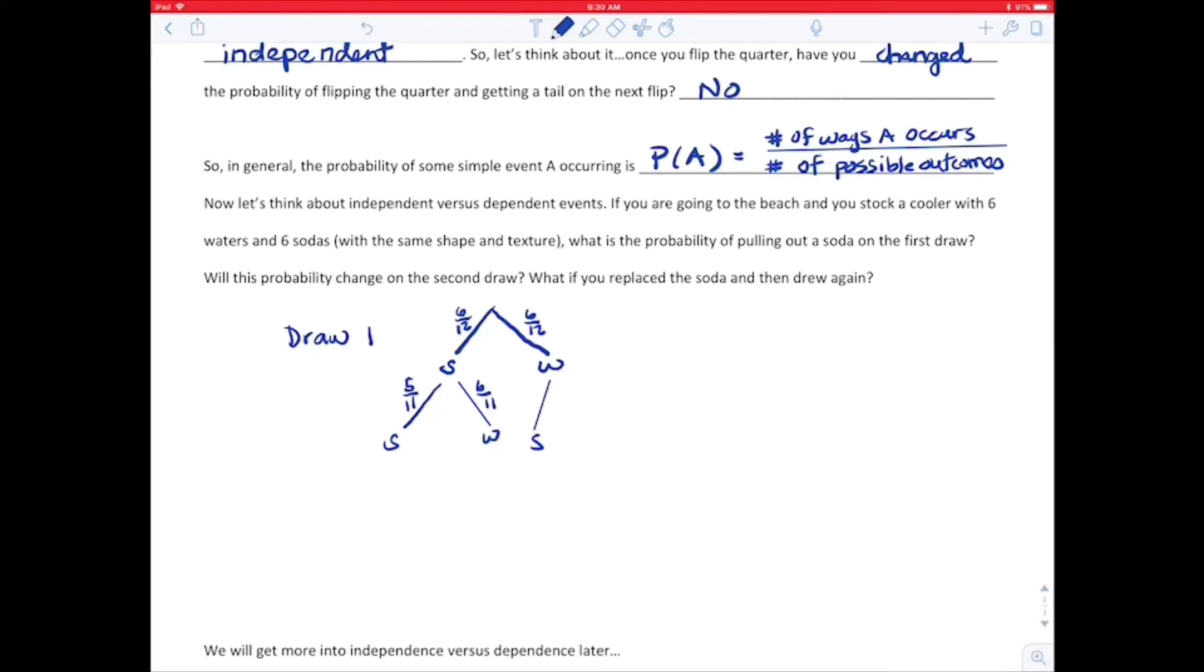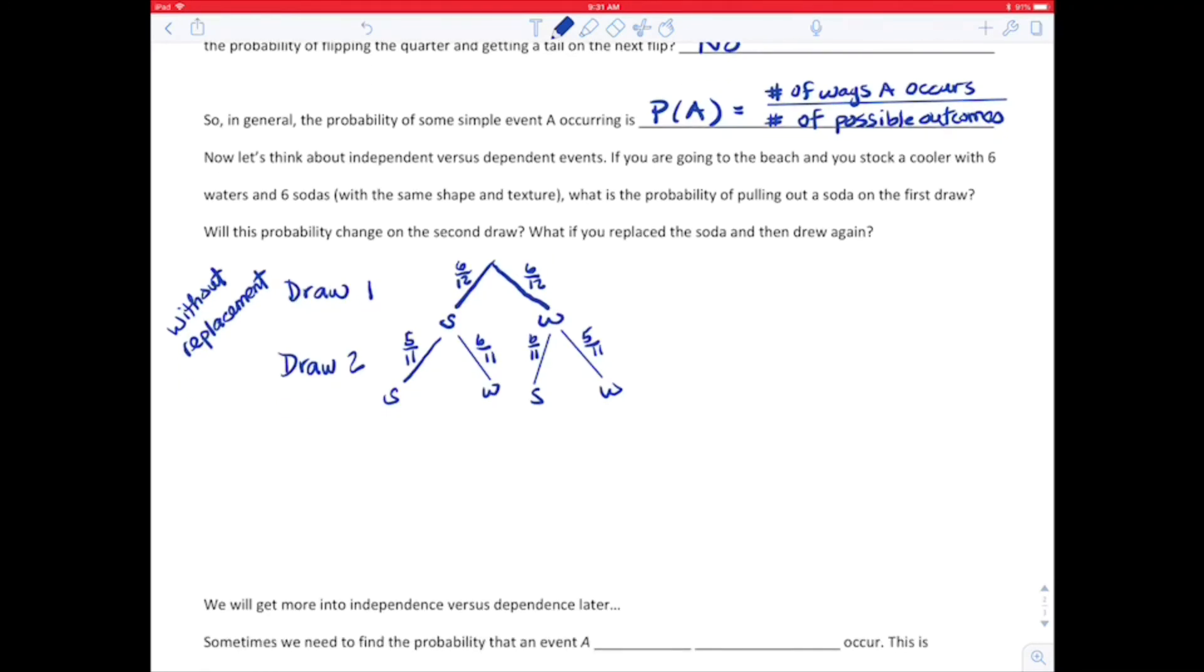And that's if you drew the soda first. If you drew the water first and then a soda, you would have six out of 11 sodas, or a chance of six elevenths to get a soda on that second draw, and five elevenths for the water. So it makes a difference as to what you picked on the first draw. And this is modeling without replacement.